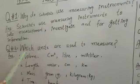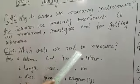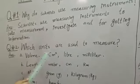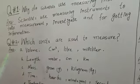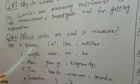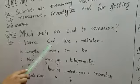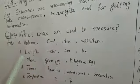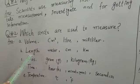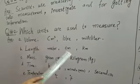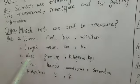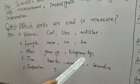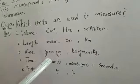Question No. 2 Which units are used to measure? Our answer is A. Volume. For volume we will use centimeter cube, liter and milliliter. Then, for length, we will use meter, centimeter and kilometer. For mass, we will use gram and kilogram. Focus on the spellings. Your spellings must be accurate.